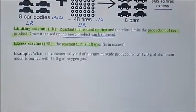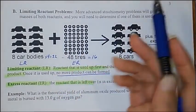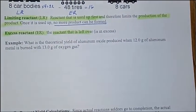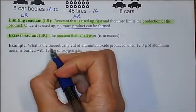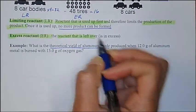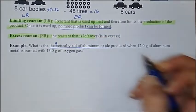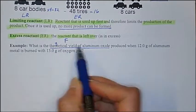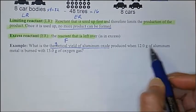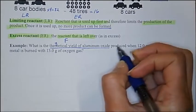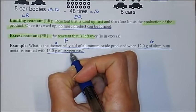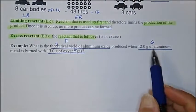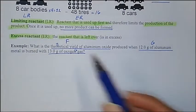Let's put it to math, because limiting reactants are the more advanced stoichiometry problems. So right here: what is the theoretical yield of aluminum oxide produced when 12 grams of aluminum metal is burned with 13 grams of oxygen gas? Remember that theoretical yield of aluminum oxide — theoretical yield actually means grams. You're trying to find the grams of aluminum oxide. You're also told you have 12 grams of aluminum and 13 grams of oxygen. Notice in this problem we have two givens.